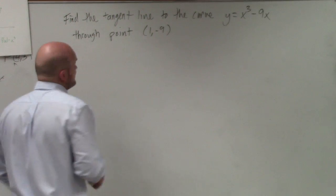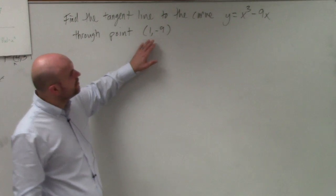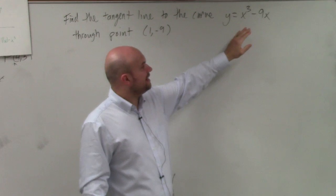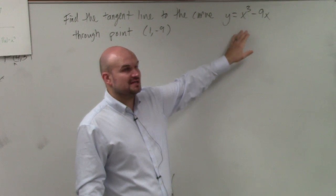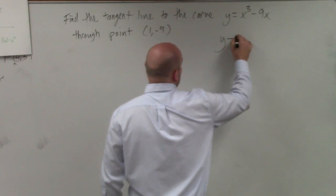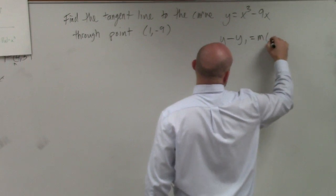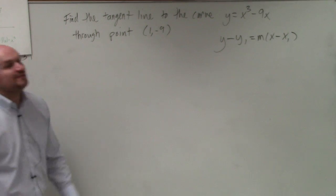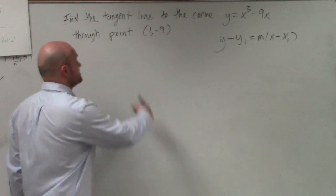However, if we need to find a tangent line, we need to write the equation of a line. So we could say y - y₁ = m(x - x₁). And remember, the derivative of our equation is going to tell us what our tangent line is.